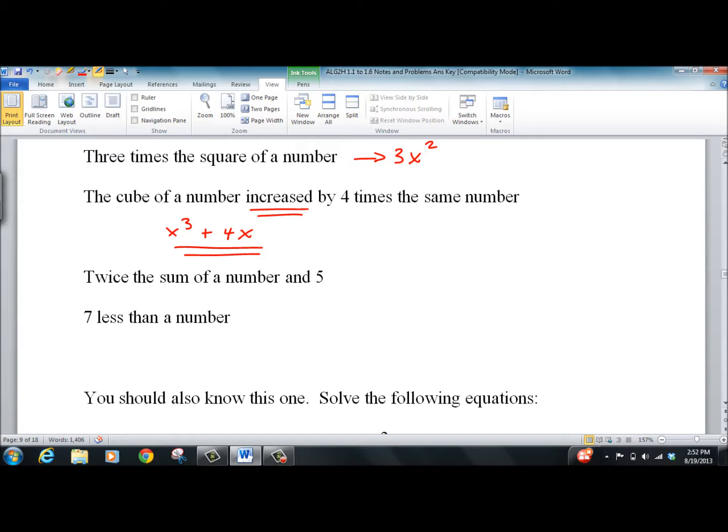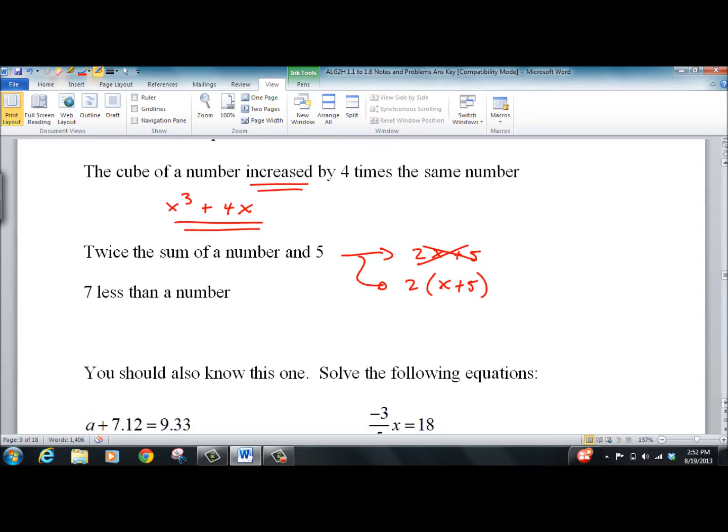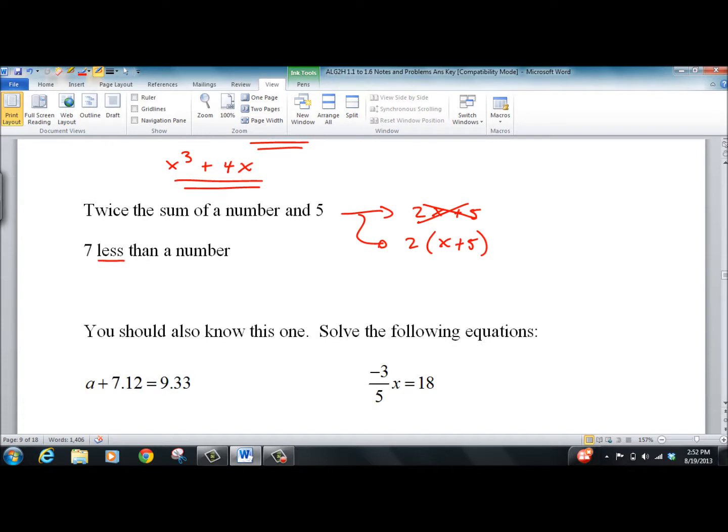Twice the sum of a number and 5. Now, the problem is, is it twice that? And I would argue no, it's twice the sum of a number and 5. So you're looking for something like 2(x+5). And then the tricky one that I'll put on a test to mess with you, 7 less than a number: x minus 7. Done all the time to try and mess with people, and I don't like trying to mess with people, but it does show up, so you have to be aware of it.